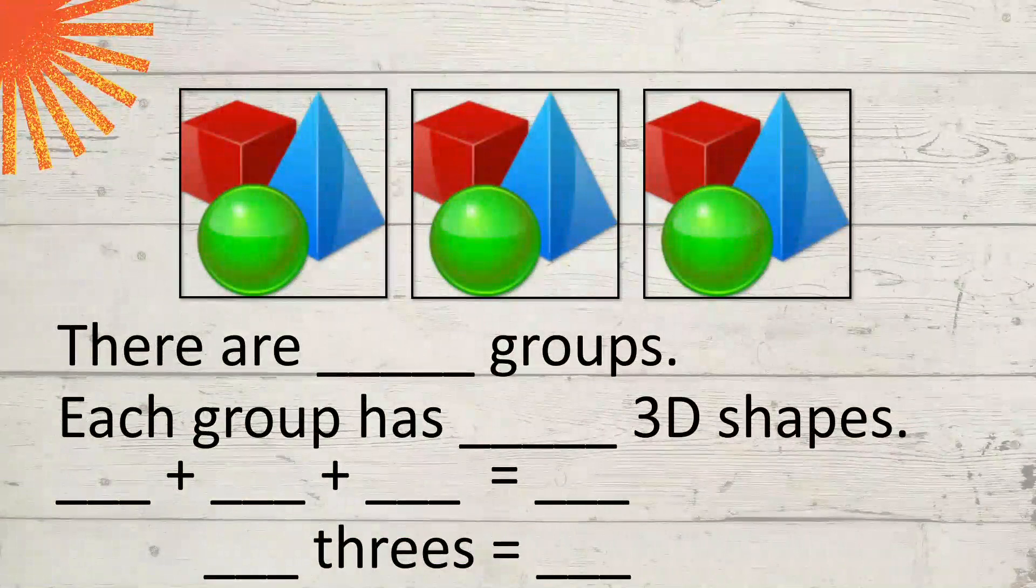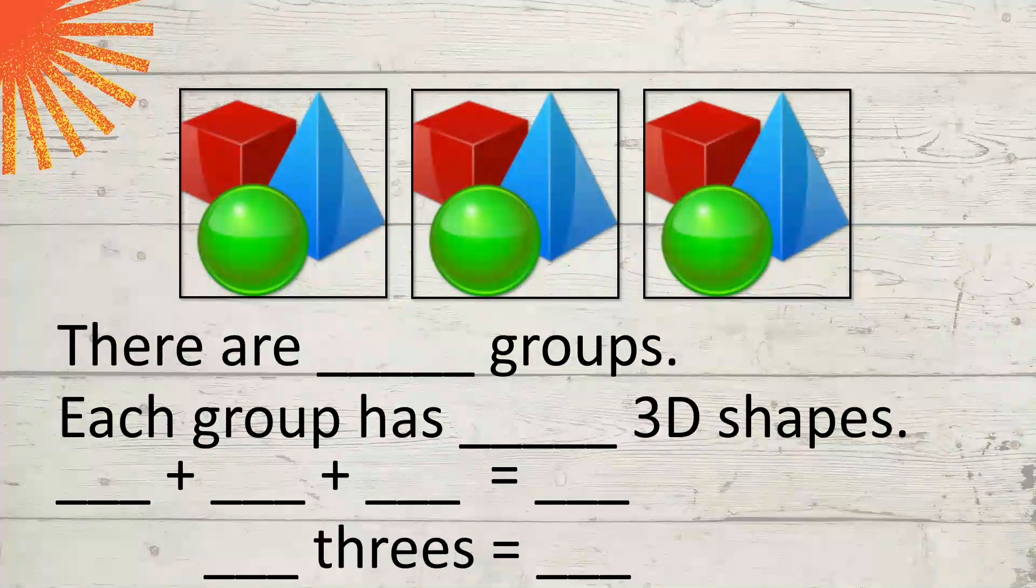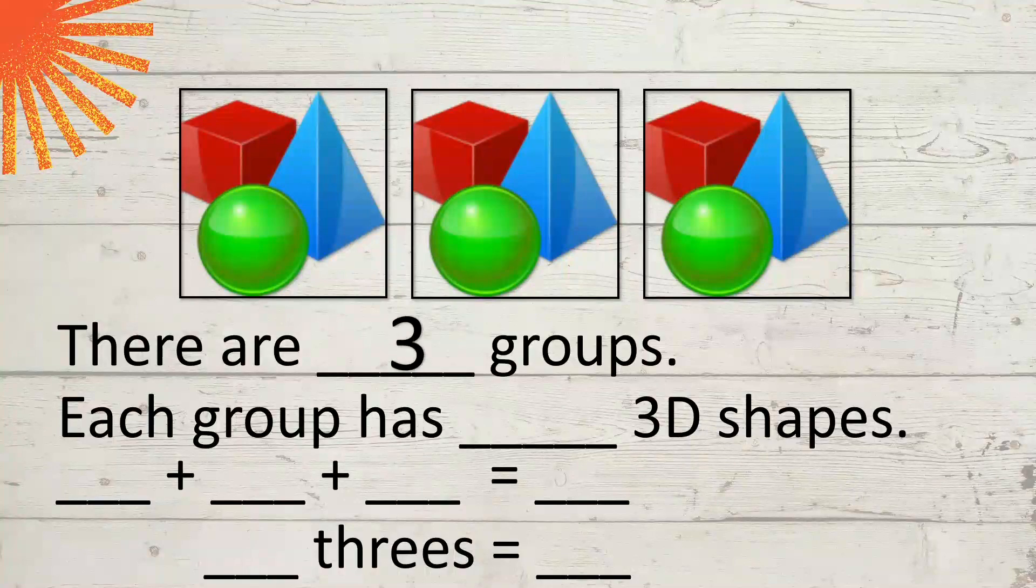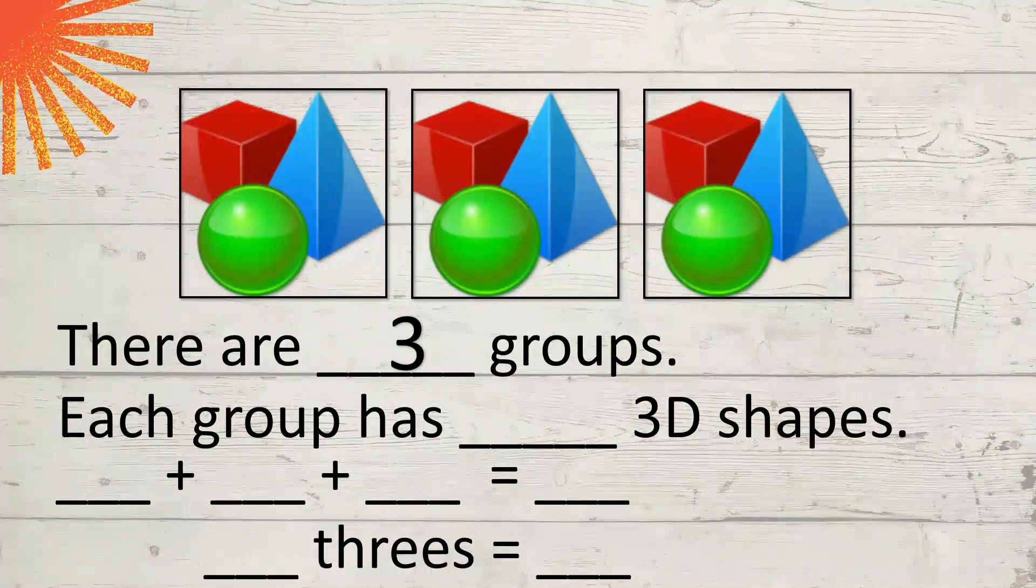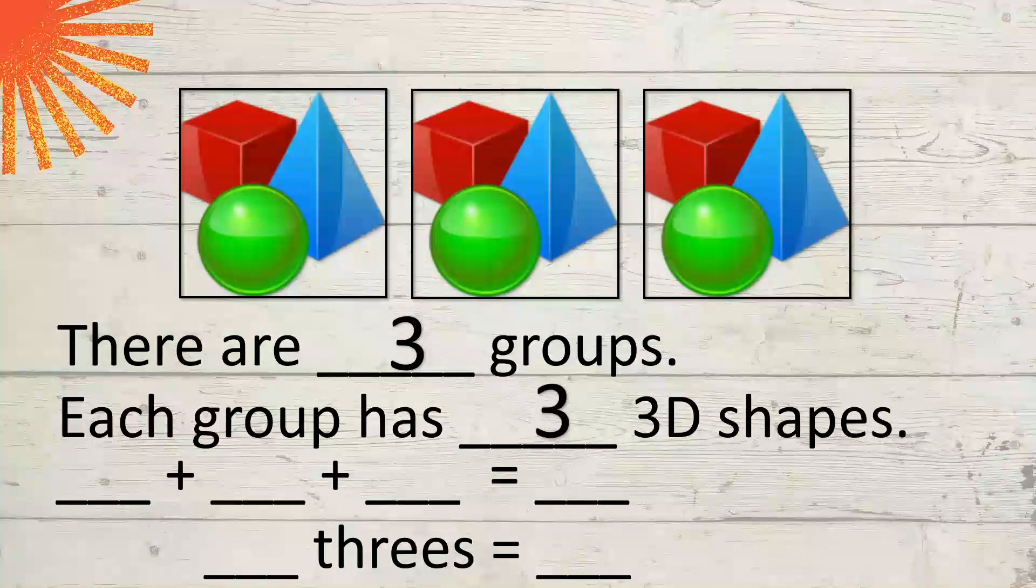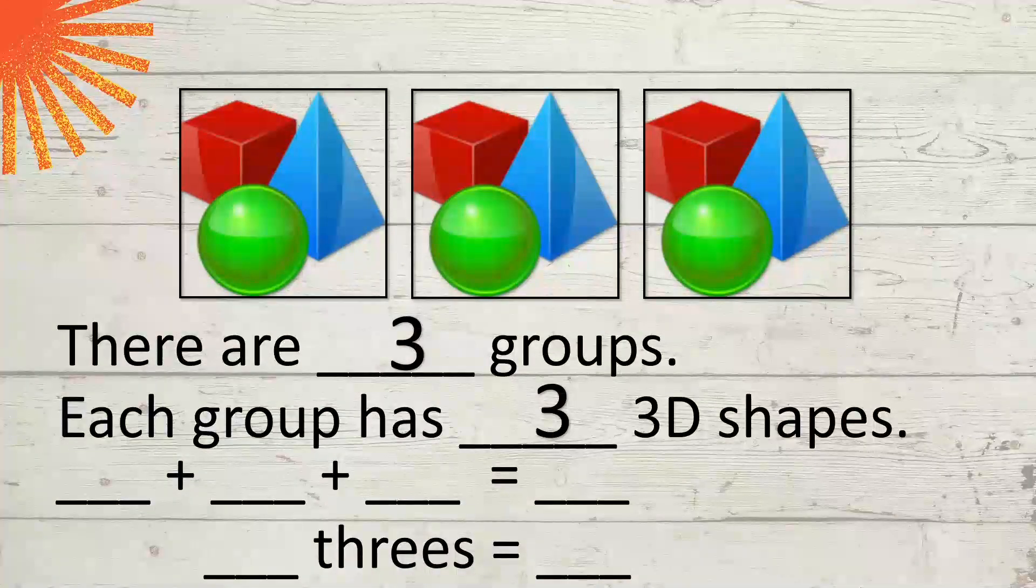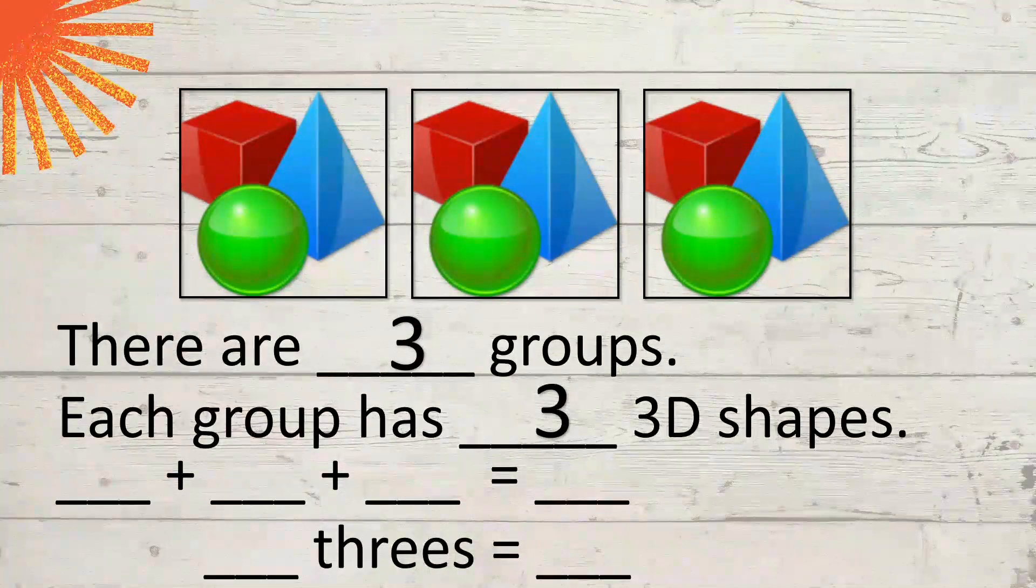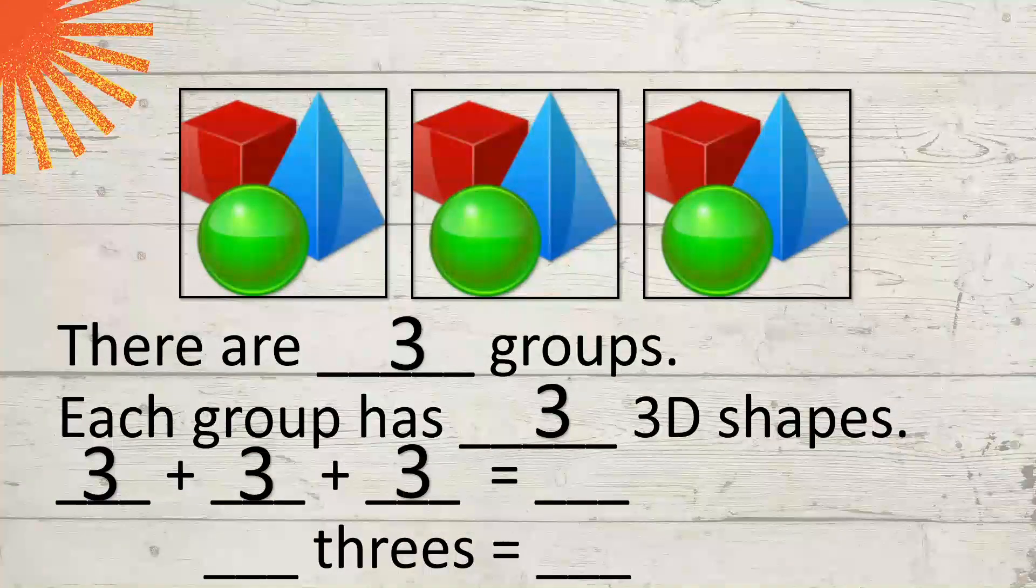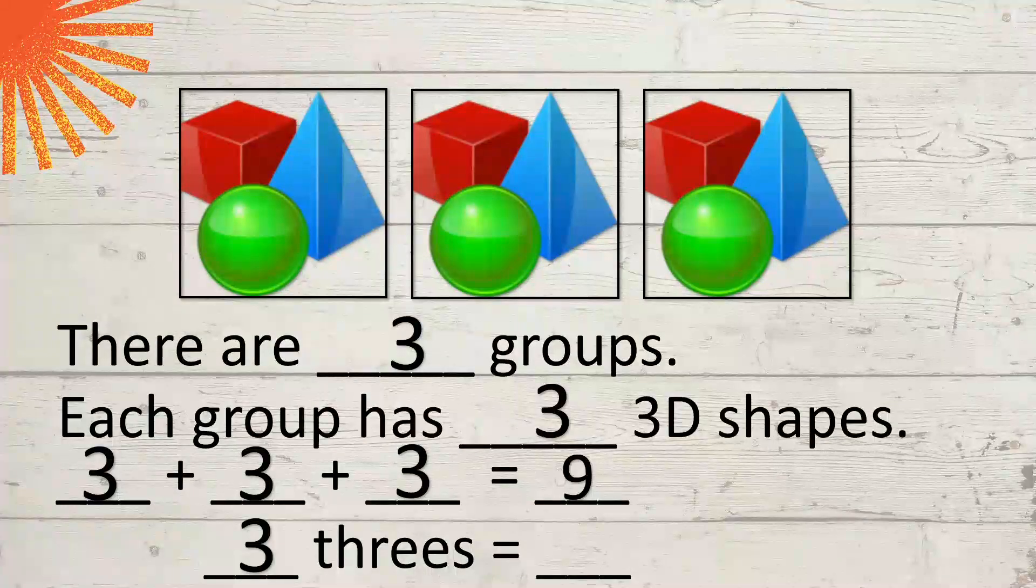Let's have another example. Let's fill in the blanks. There are blank groups. How many groups can you see? There are 3 groups. And each group has how many shapes can you see? 3, 3 3D shapes, 3 dimensional shapes. So what is our addition sentence? Alright, 3 plus 3 plus 3 equals 9. So 3 threes is equal to 9.